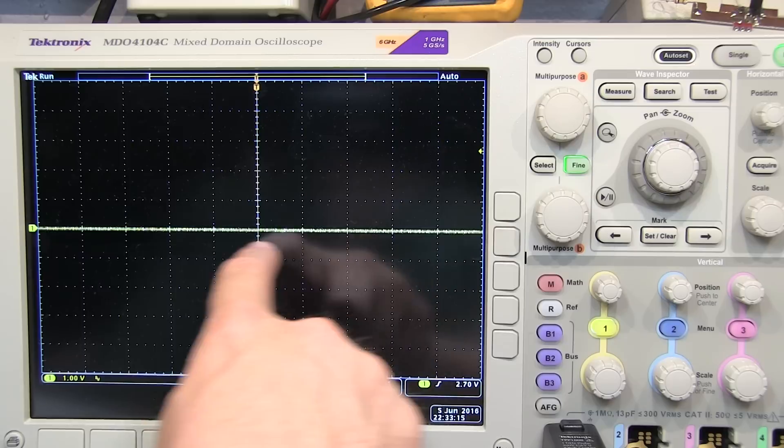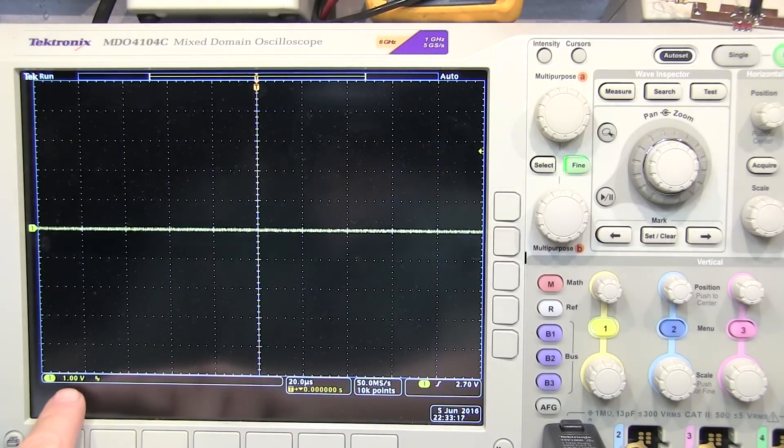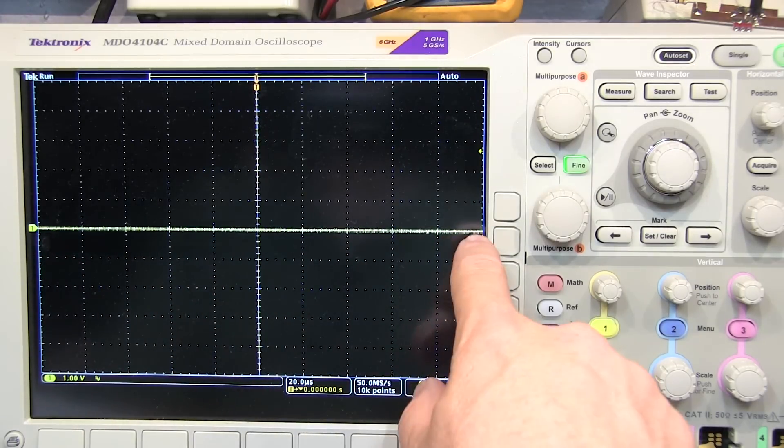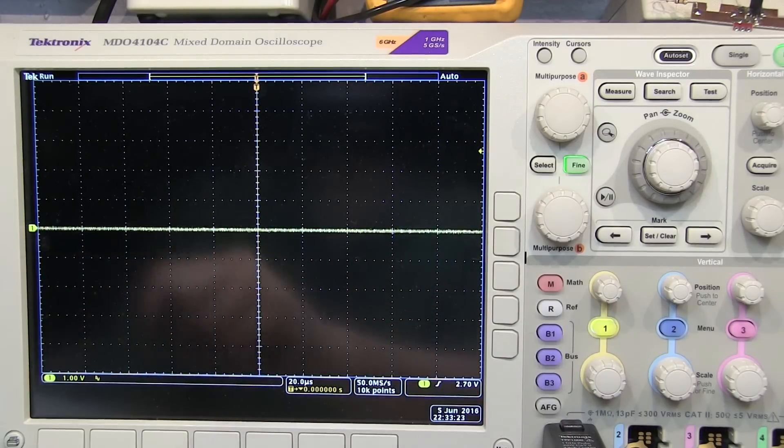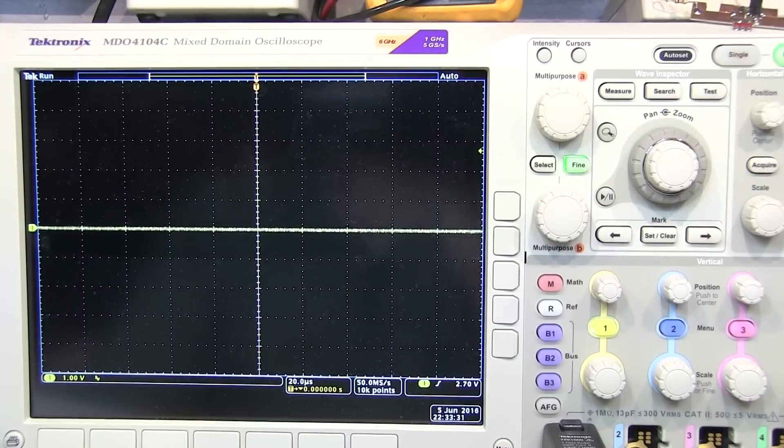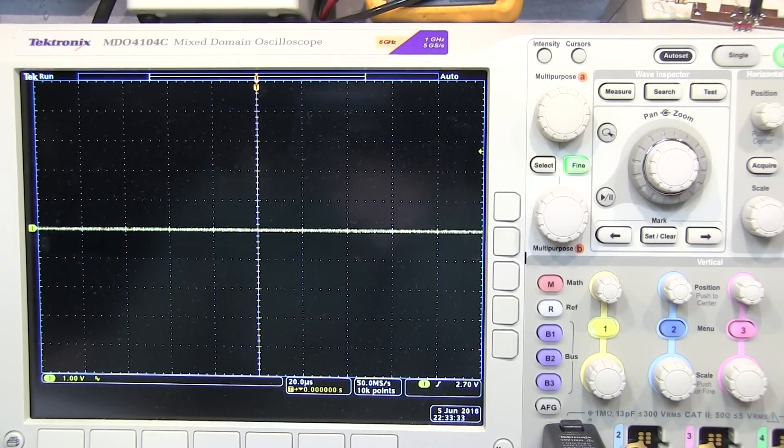And that's quite simply the position control. If I position that right in the center, then that means that that point right there is ground. I'm running at 1 volt per division, so this can represent up to plus or minus 5 volts with respect to ground.